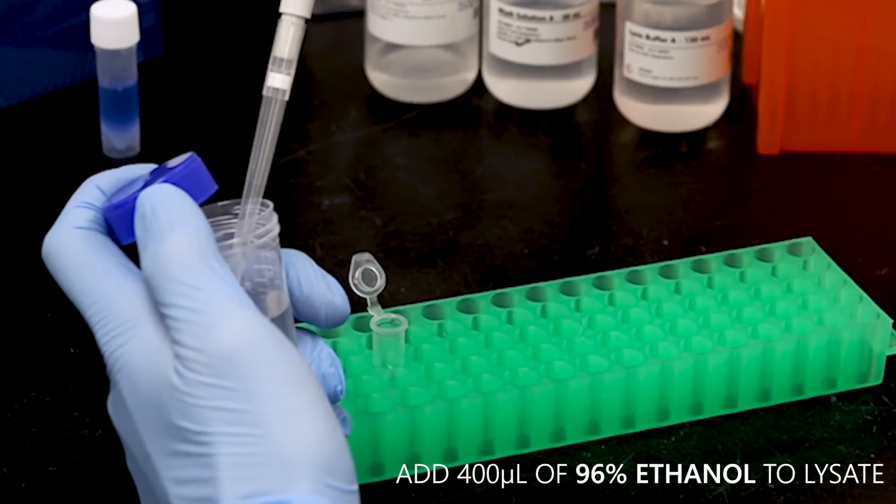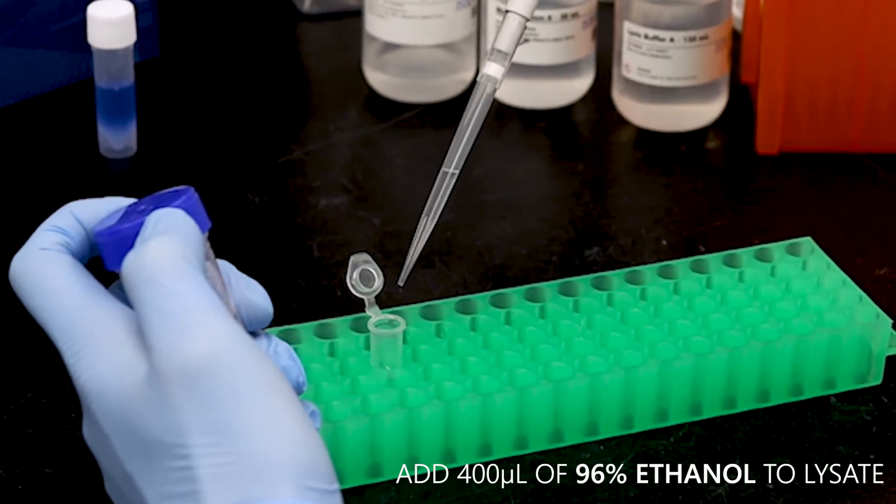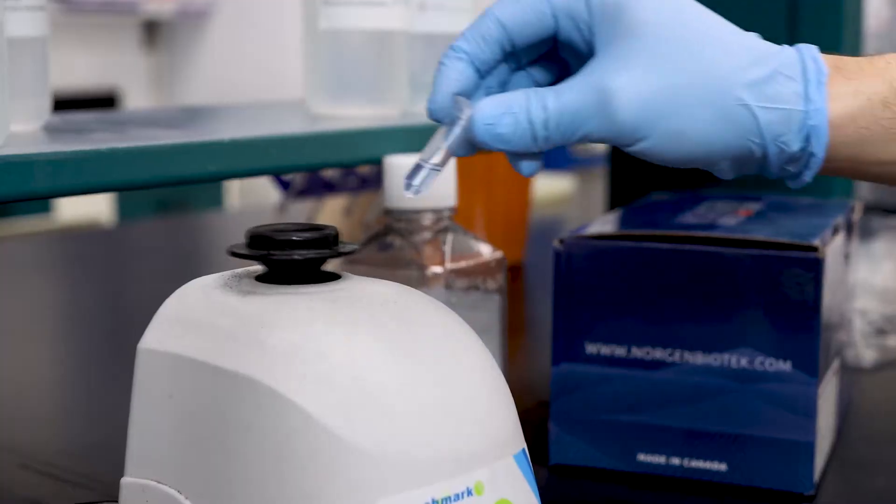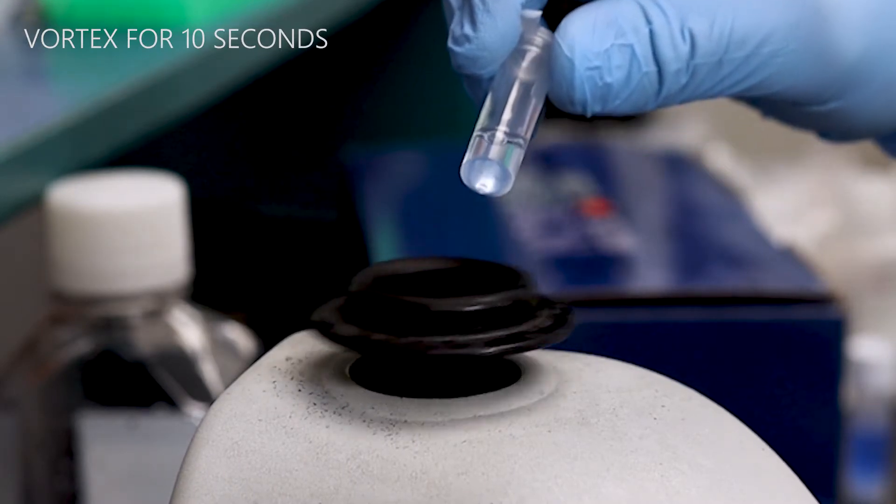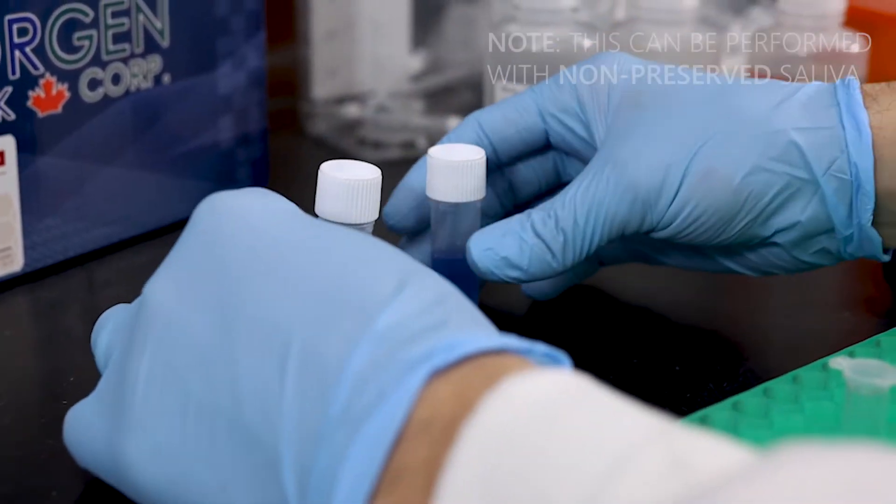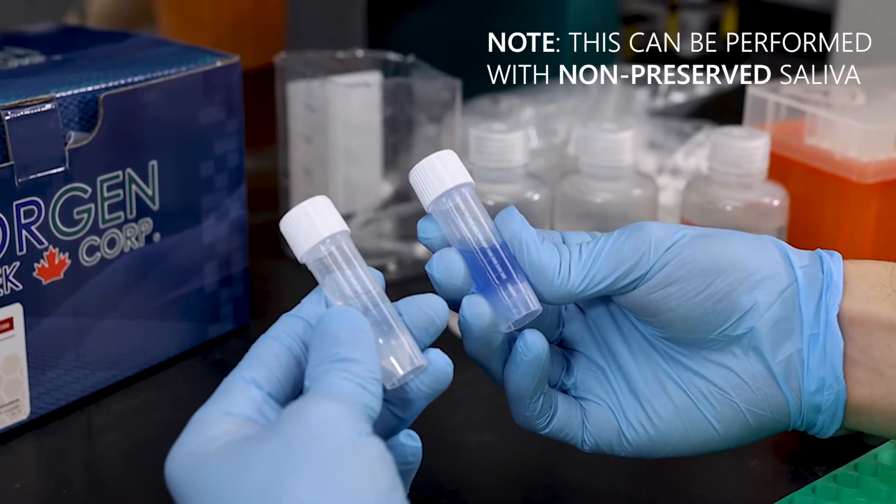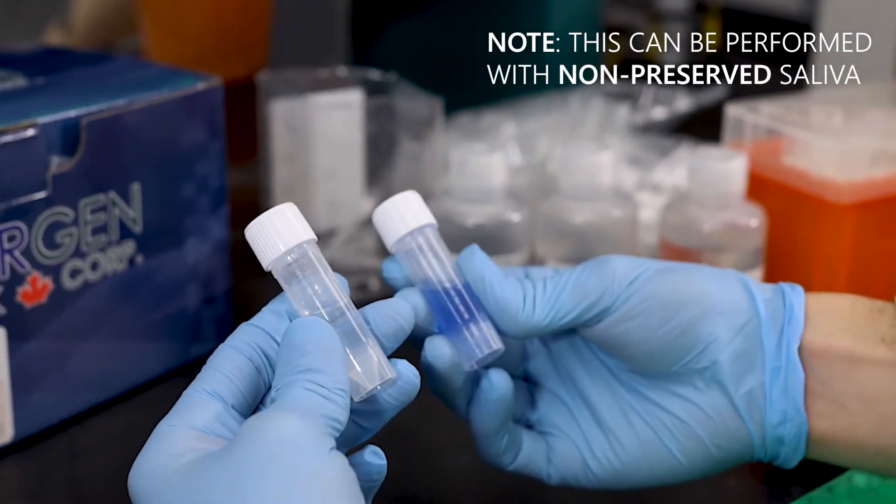Then add 400 microliters of 96% ethanol to the lysate. Vortex once again for 10 seconds. This procedure can also be used to isolate RNA from fresh saliva and swab samples.